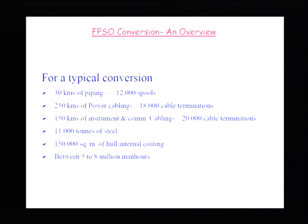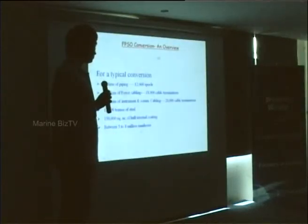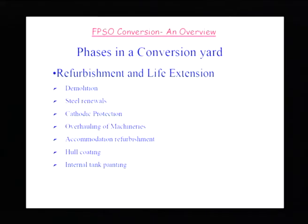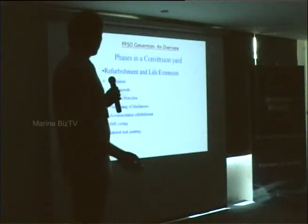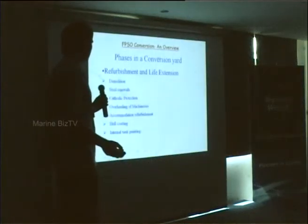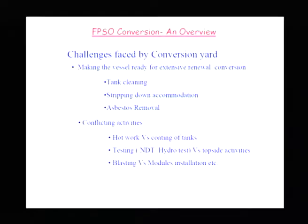Hull coating and internal surface treatment covers roughly 150,000 square meters. Man-hours spent vary from project to project but roughly between 5 to 8 million man-hours. Phases in a conversion yard include demolition, steel renewals, cathodic protection, overhauling of machineries, accommodation refurbishment, hull coating, and internal tank painting.